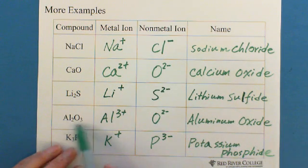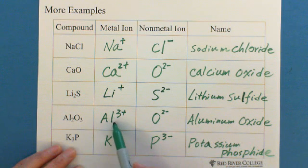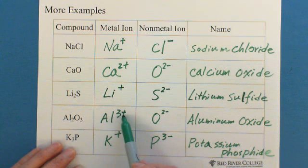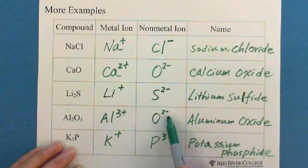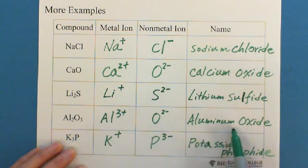Al2O3, Al is aluminum, which is in transition metal, but with fixed positive charge, 3+. Oxygen two negative, to name them, aluminum oxide.